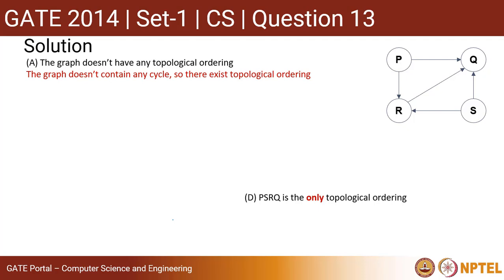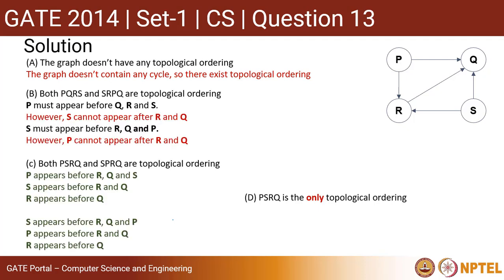Let us go for the solution, option by option. The first option says the graph does not have any topological ordering. If you see the graph, there is no cycle within the graph. Since the graph does not have a cycle, it must have some topological ordering. So option A is incorrect.